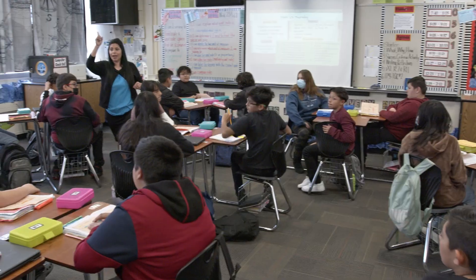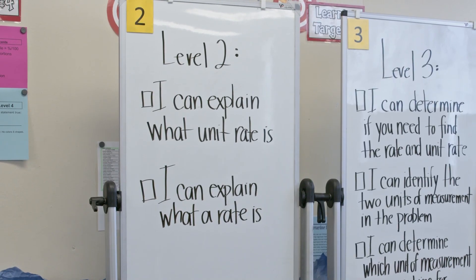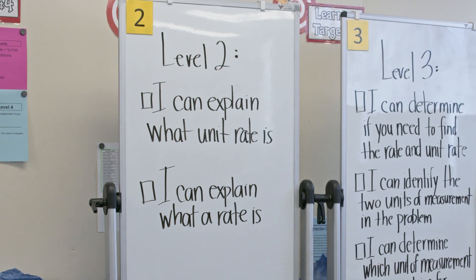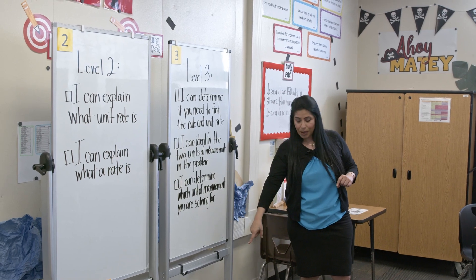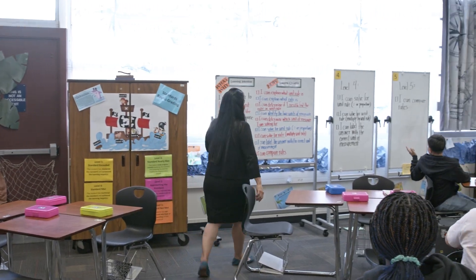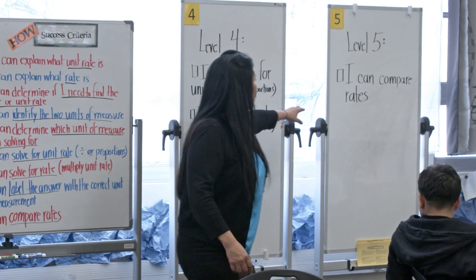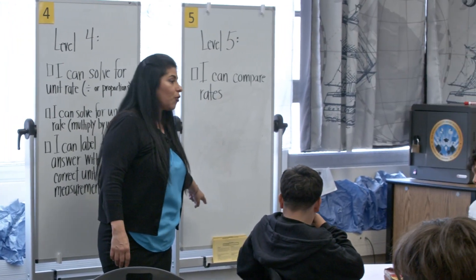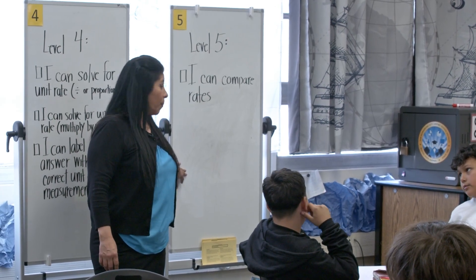Let me show you. My level two is back here. This is where everybody's going to start, with a level two, and it's going to be based on these two success criteria. Then you're going to move to a level three based on these three success criteria, and the papers are right down there. Level four is based on these success criteria and the papers are on the floor. Level five is based on the last success criteria and the papers are right there. How many papers do you grab? One per?